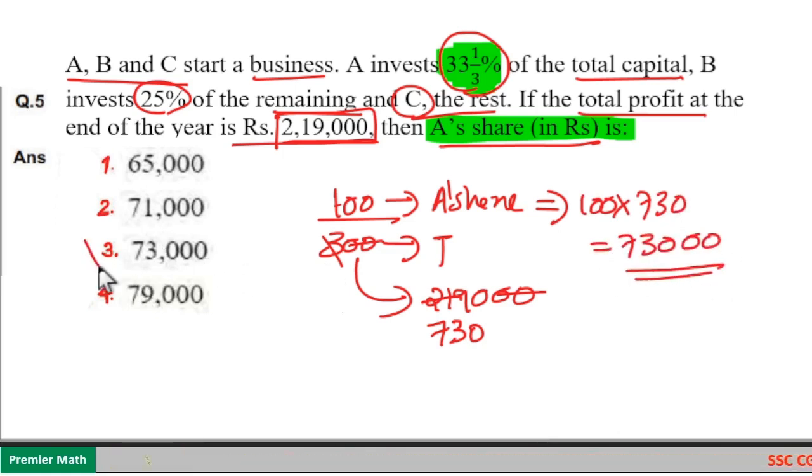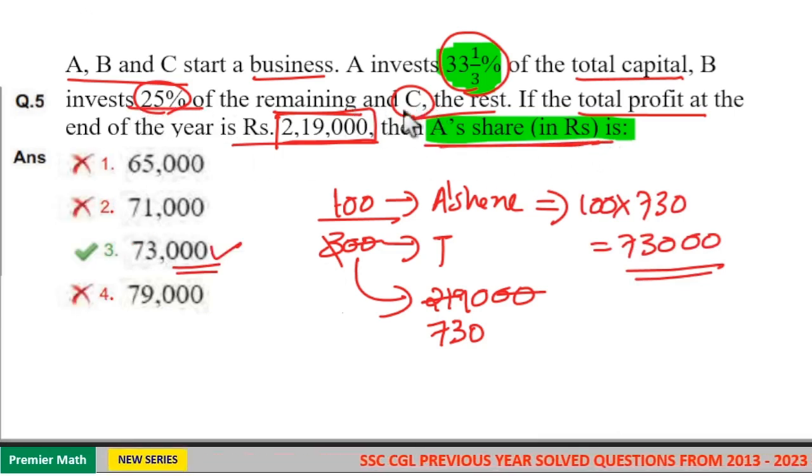So option three is your answer here. Always read what you have to find. Don't try to calculate what is C's share and what is B's share.